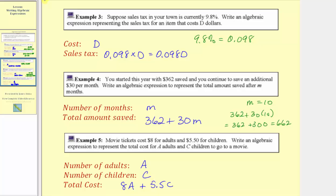Let's look at an example. If four adults and ten children go to the movies, a would equal four and c would equal ten. The total cost would be eight times four, plus five point five times ten, which equals thirty-two plus fifty-five, which equals eighty-seven. So it would cost eighty-seven dollars for four adults and ten children to go to the movies. I hope you found this helpful.